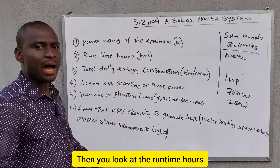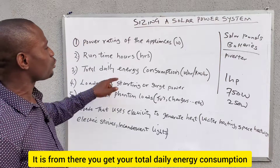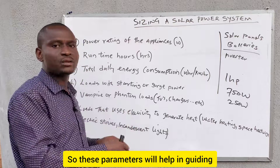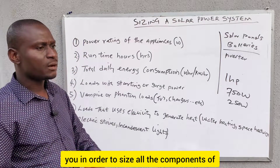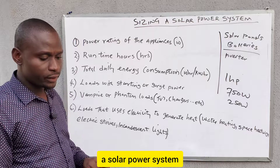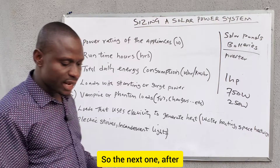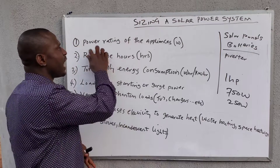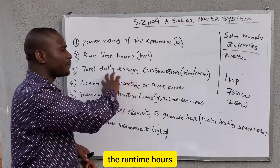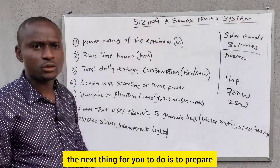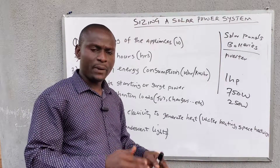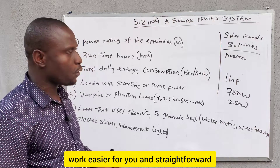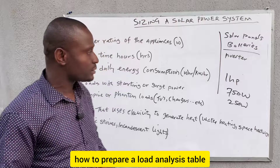The main things to look at are the power rating of the loads and the runtime hours — how many hours they are going to run. From there you get your total daily energy consumption, and these parameters will guide you in sizing all the components of a solar power system. After taking the power rating and runtime hours into account, the next step is to prepare a load analysis table to make the work easier and straightforward.